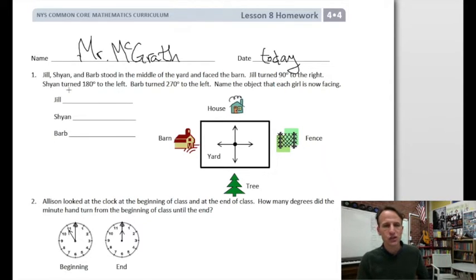We're starting right off with the word problem. Jill, Cheyenne and Barb, three people, stood in the middle of the yard and faced the barn. Take a quick look, here's the yard, they're standing in the middle at the center point and they're facing the barn. Jill turned 90 degrees to the right. So Jill's facing the barn, she turns 90 degrees to the right. If you have to or want to, just turn and face that barn. So Jill goes here, and what is she facing now? The house.